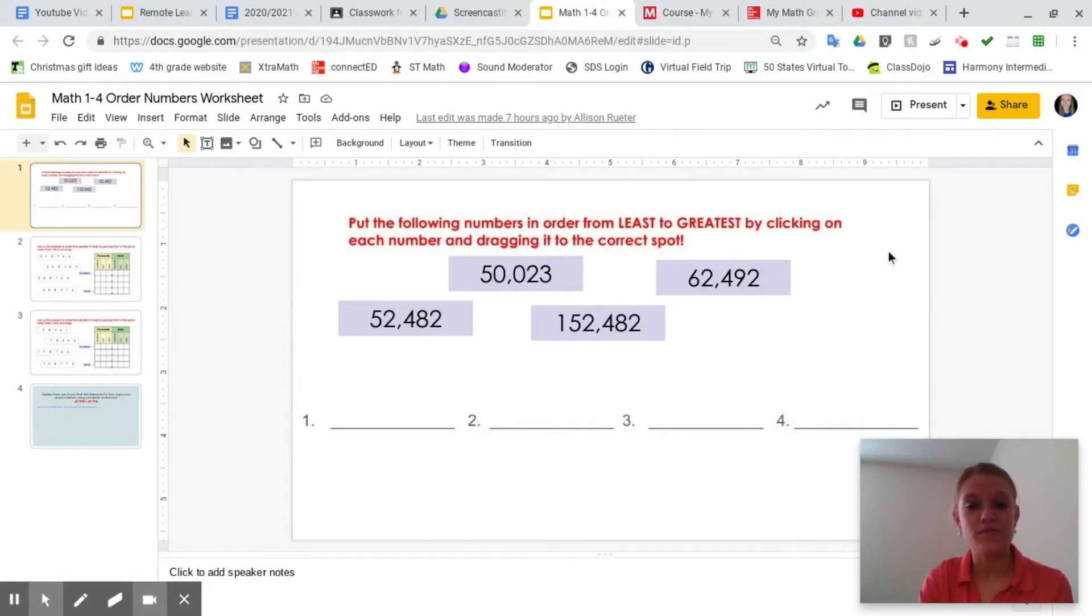Okay, so this is your math worksheet for lesson four, and I'm just going to walk you through how to do this worksheet because it is set up a little bit differently than what we've been dealing with. So I'm always going to make sure I'm reading the directions. And it's in red. That must mean it's important. I'm going to read it. Okay, it says, Put the following numbers in order from least to greatest by clicking on each number and dragging it to the correct spot. Okay, it says, Click on each number.